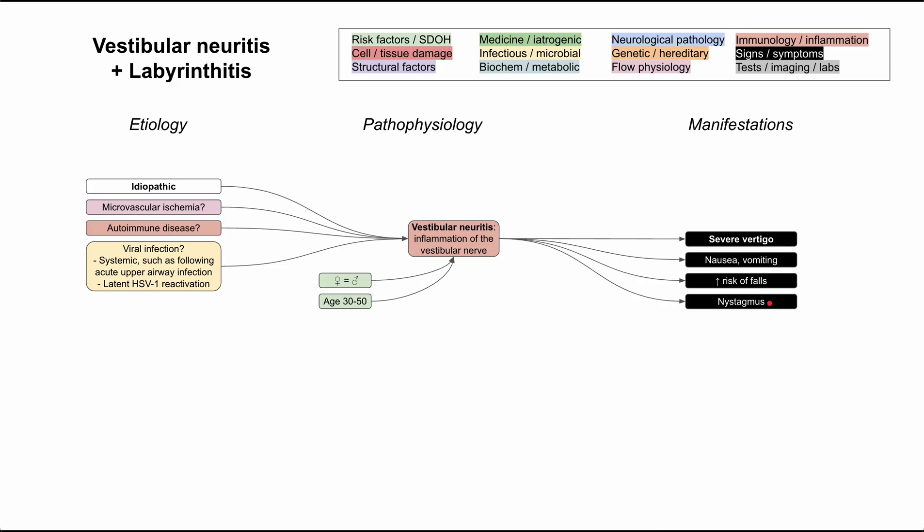You might also notice nystagmus in the patient on physical exam. The symptoms for vestibular neuritis tend to develop over hours. The most severe symptoms — really bad vertigo and vomiting — tend to last for a day or two. But milder symptoms, like mild disorientation, feeling wobbly, or the room spinning when lying down, can persist for months. It tends to last longer than BPPV, which is usually on the order of seconds to one minute, so that's one way you could differentiate them.